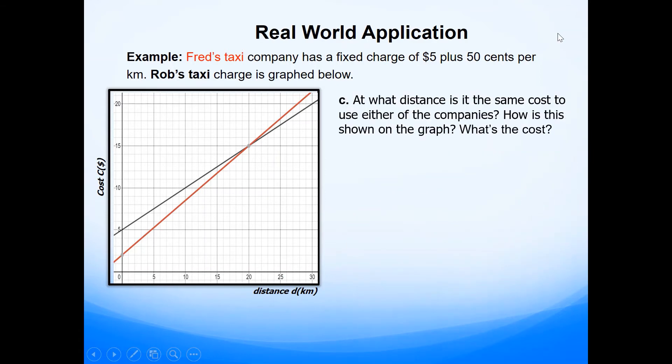So the next question says, at what distance is it the same cost to use either of the two companies, Fred's taxi or Rob's taxi? And how is this information shown on the graph, plus what the cost will be? So what we need to do is we can clearly see the place where the two lines intersect. This question is asking you to find the point of intersection. So you can see that when the distance is 20 kilometers, the two lines intersect, giving the cost of $15. So the answer is at the distance of 20 kilometers, the point of intersection on the graph shows that the cost is $15.